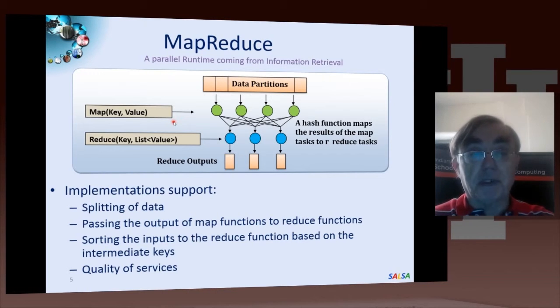And MapReduce has a very famous implementation called Hadoop, which is an open-source Apache system coming originally from Yahoo. Remember, it was Google who actually developed the original MapReduce, but the open-source version comes from their competitor, Yahoo.